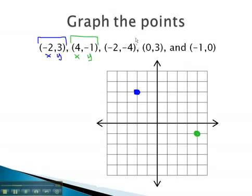The next point is (-2, -4). Negative 2 on the x and negative 4 on the y to get our point.